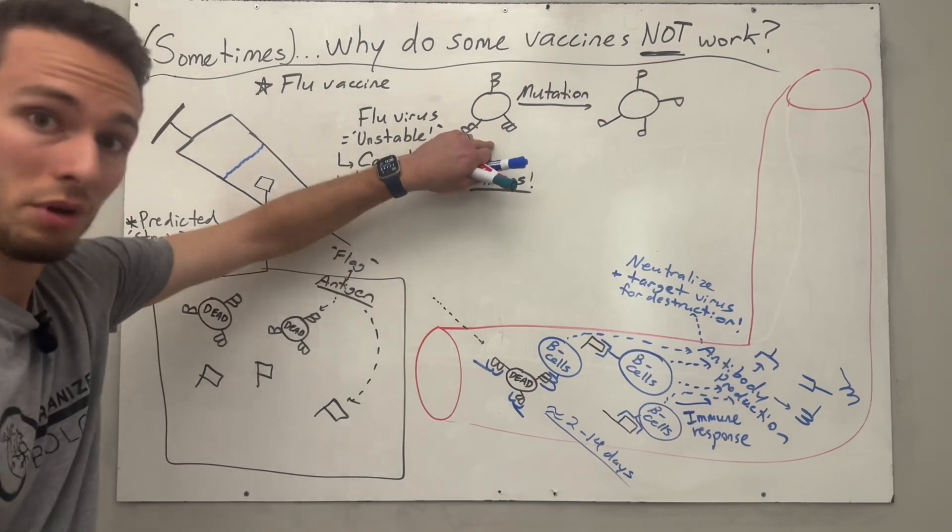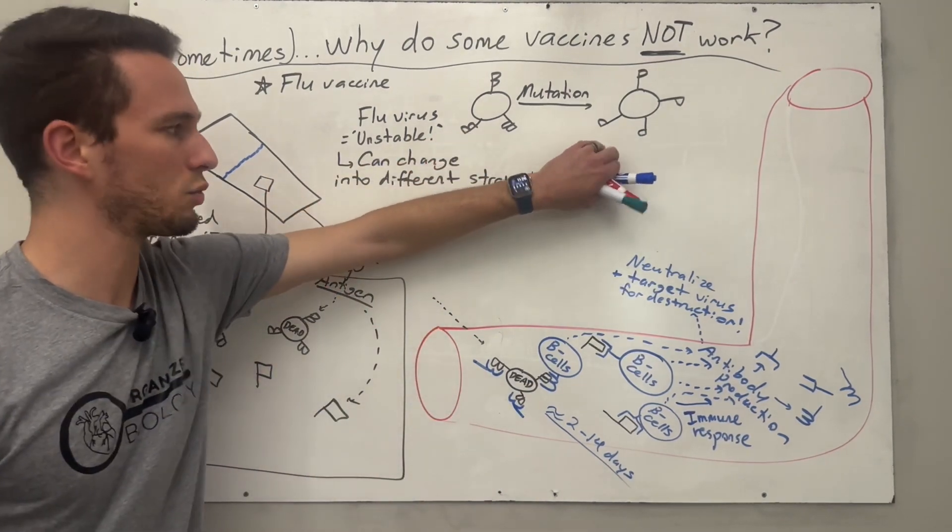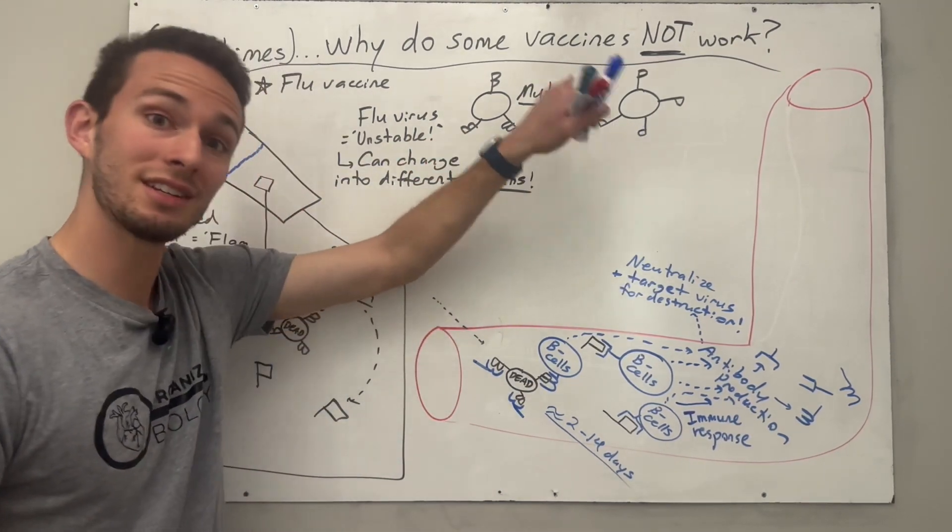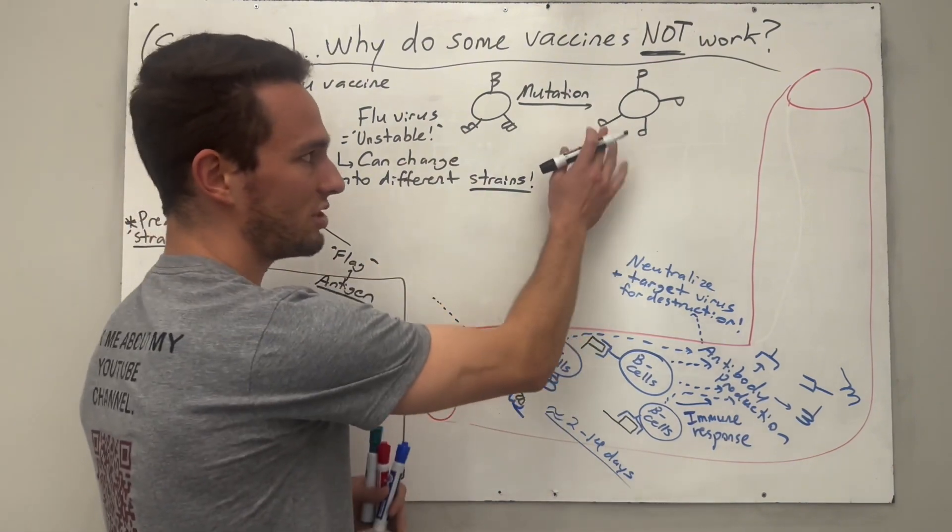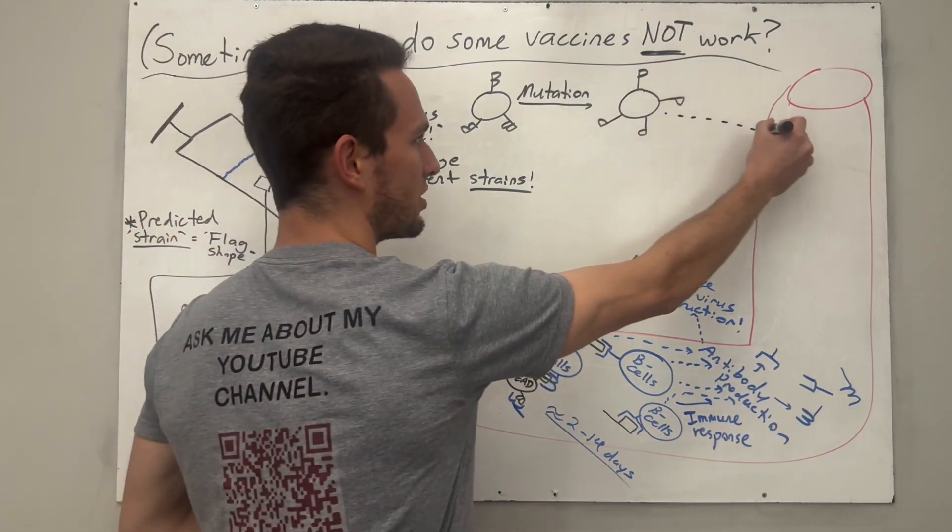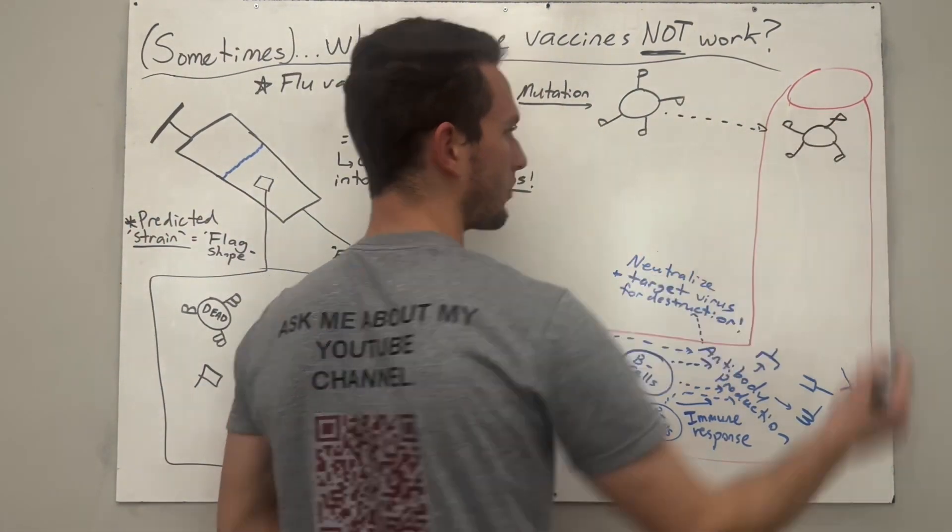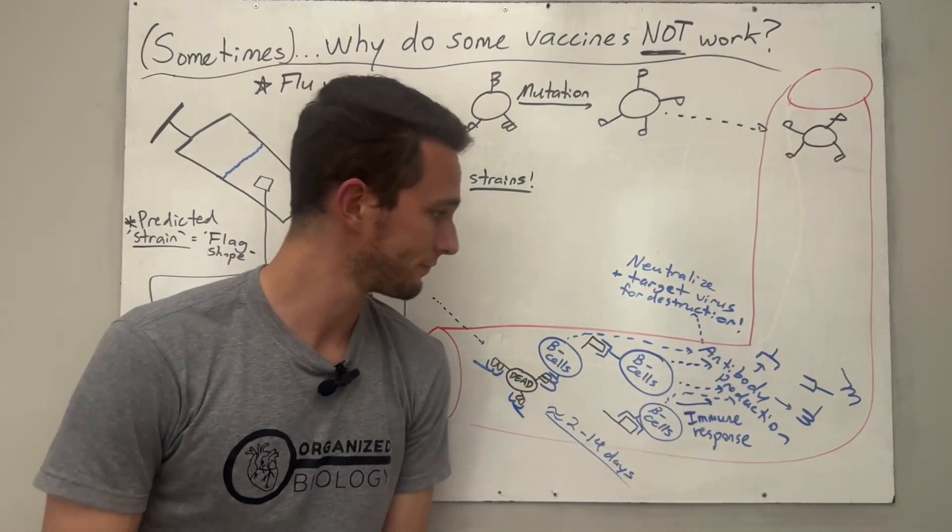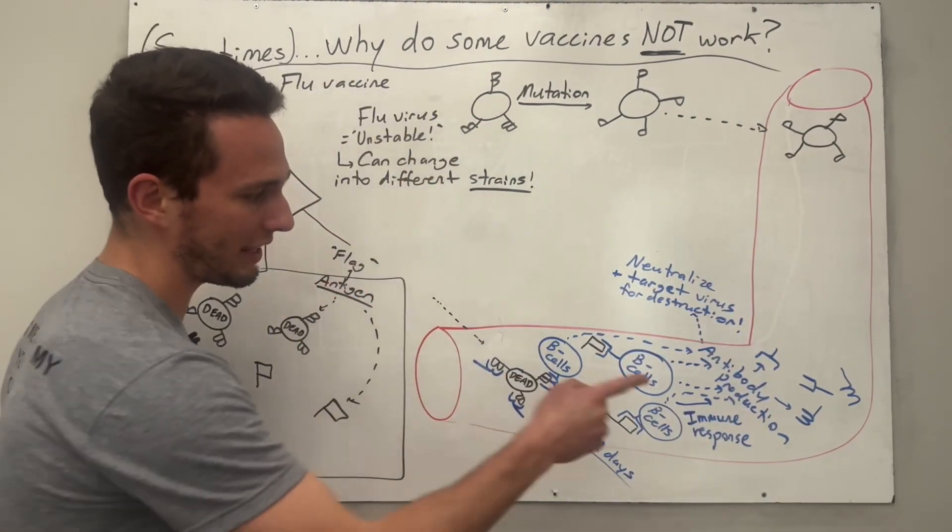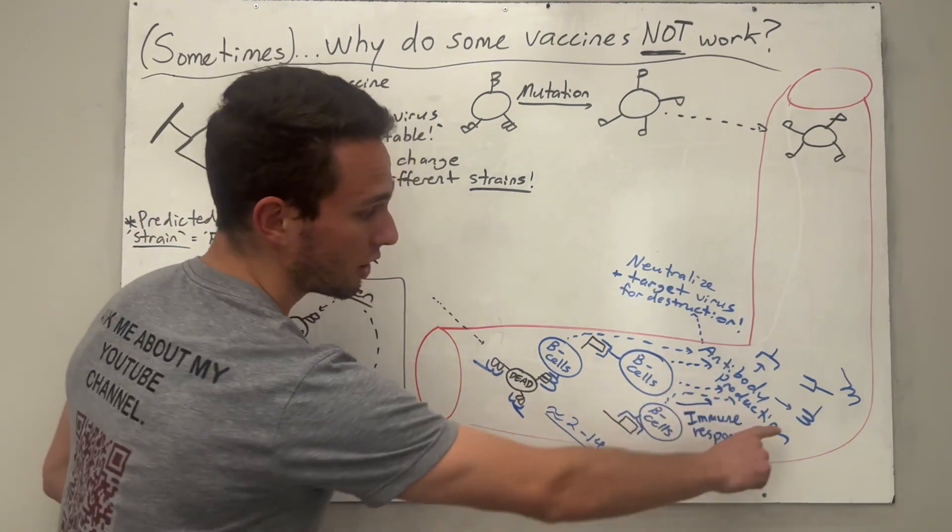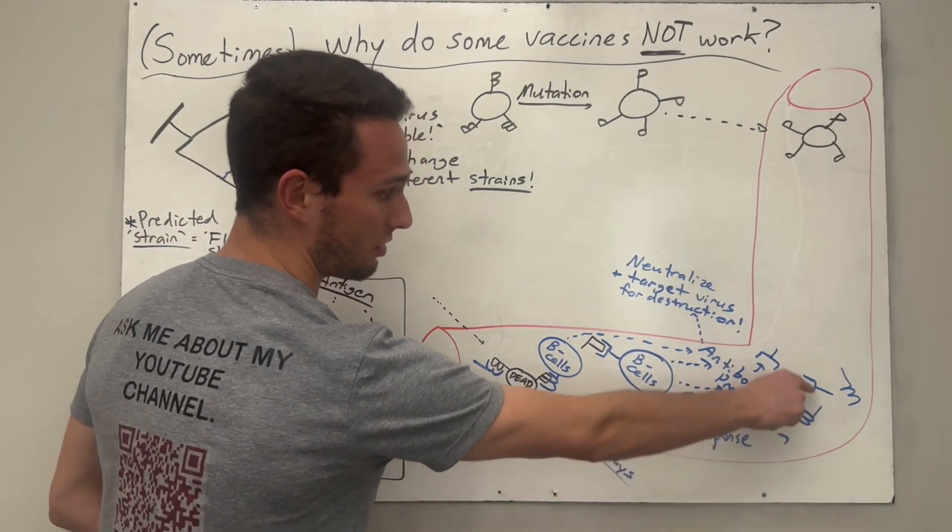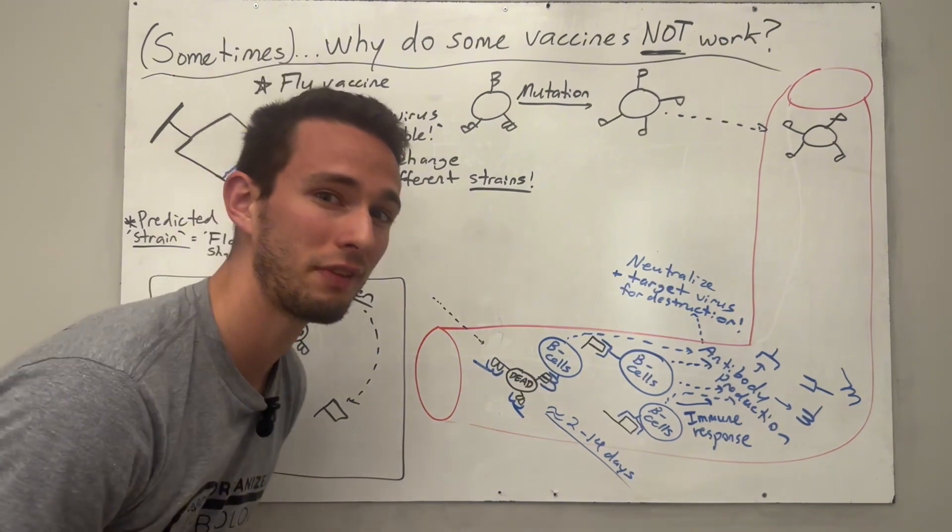So if this strain of flu mutates and now turns into this, well now you can see the flag shape looks different. If the flag shape looks different, if you get infected with this particular flu strain, do you think you're going to be able to fight it off very well? Well, likely not, because remember the antibodies that you learned how to produce look like this, and neither of these will fit onto that flu virus, right?